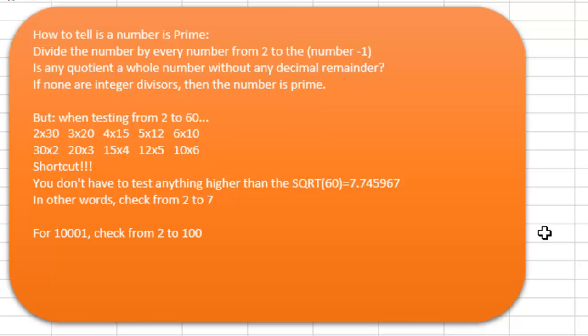Let's say we wanted to test the number 60. You'd have to do all the numbers from 2 to 60 — but not really, because clearly once you get to 30 you're halfway there. All of the factors of 60 — 2 times 30, 3 times 20, 4 times 15, 5 times 12, 6 times 10 — the rest of the factors are all reverses we've already checked. So the shortcut is you only have to check from 2 to the square root of the number. For 60, check everything from 2 to 7; for 10,001, check from 2 to 100. That dramatically limits how much we have to check.